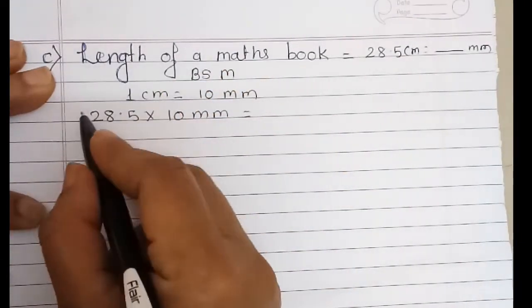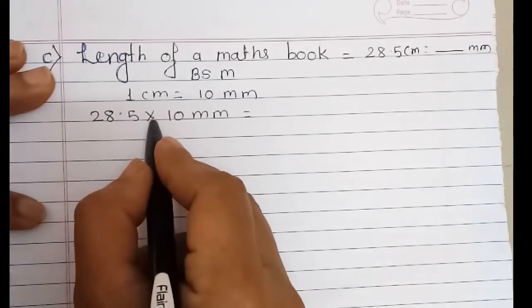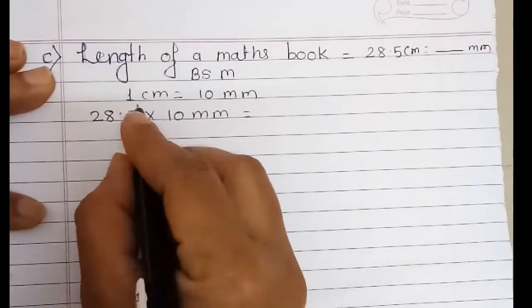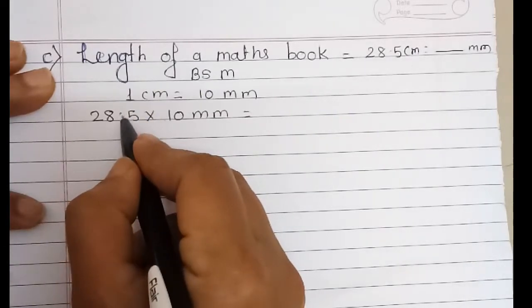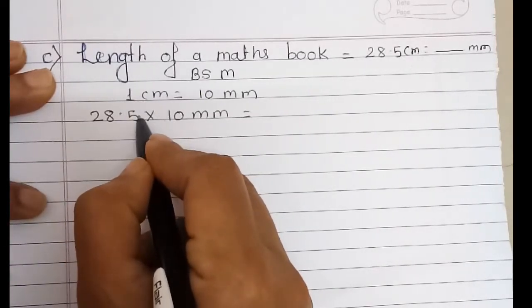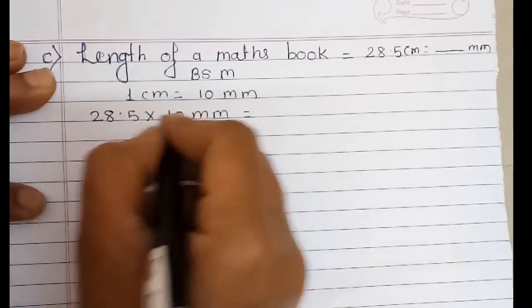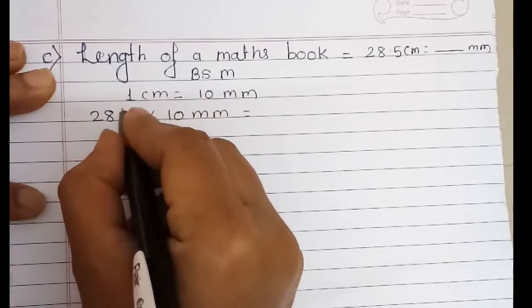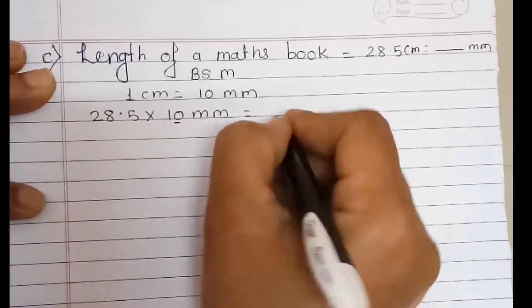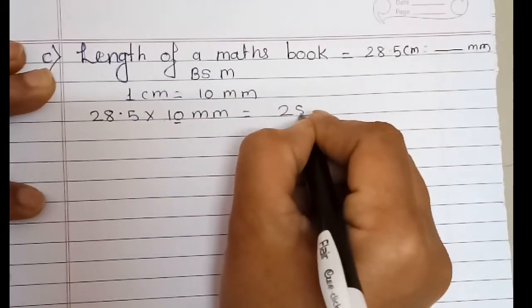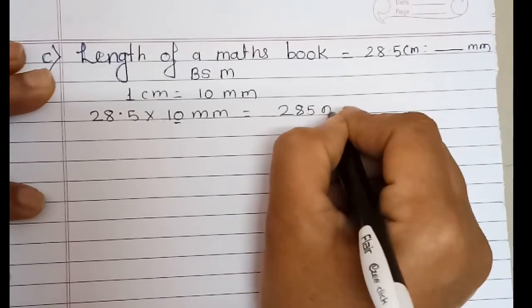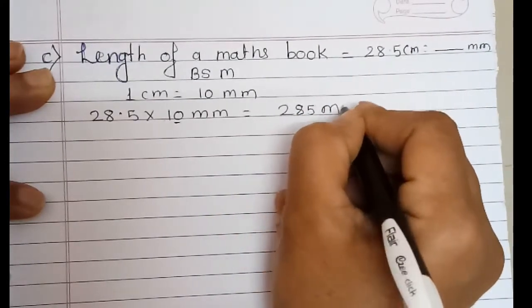When we are multiplying a decimal by 10, the decimal point moves one place to the right. So 28.5 multiplied by 10 becomes 285 mm.